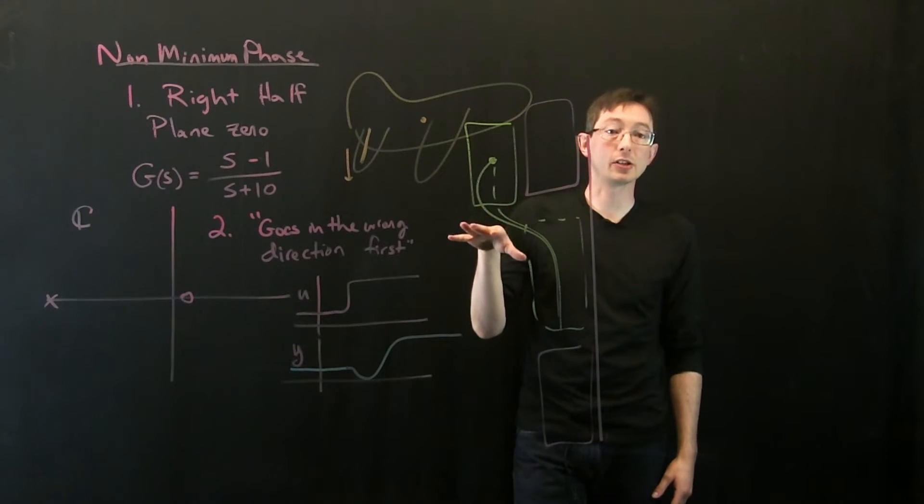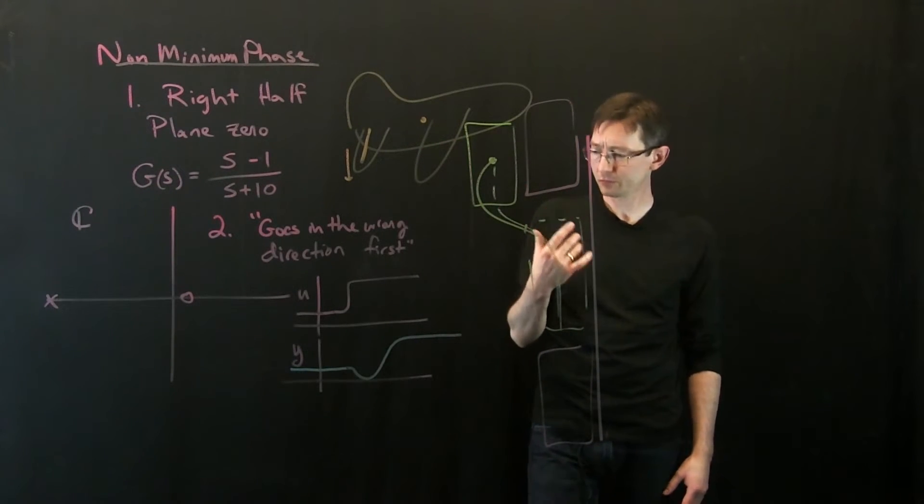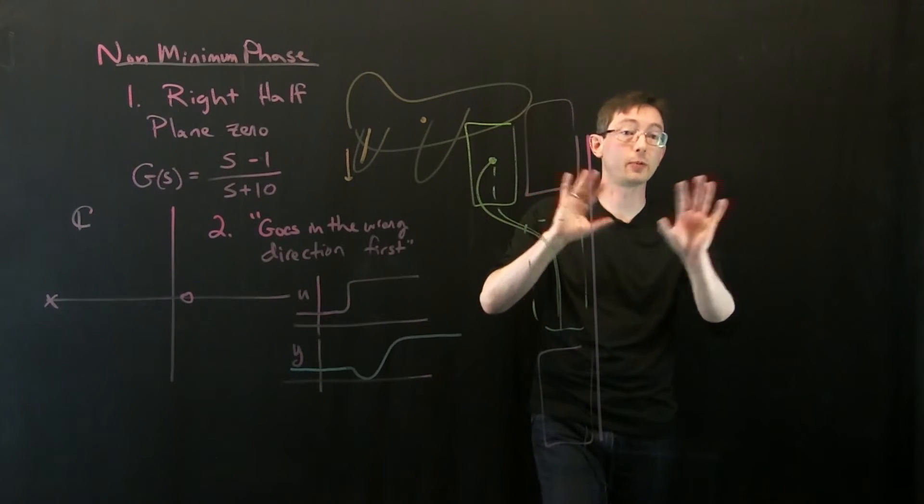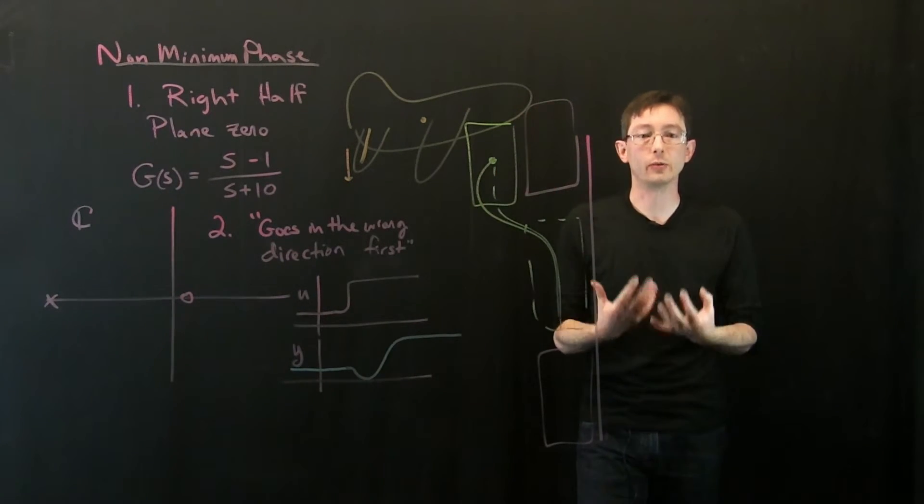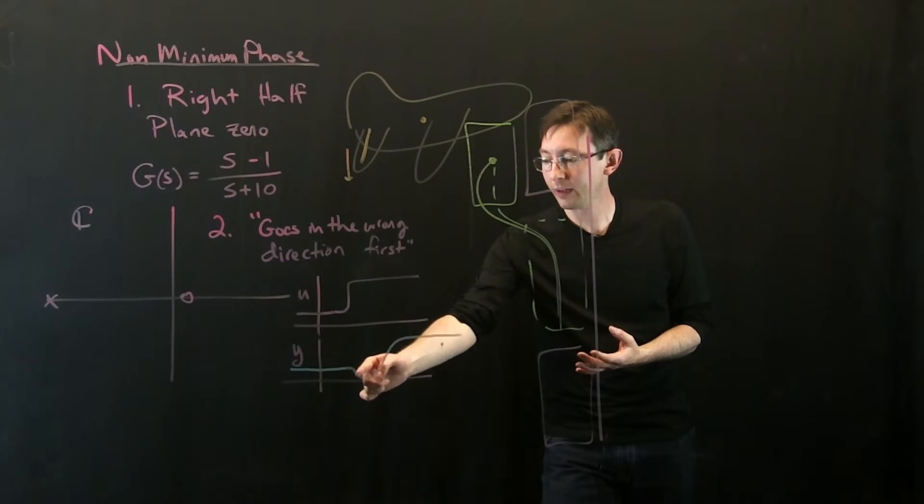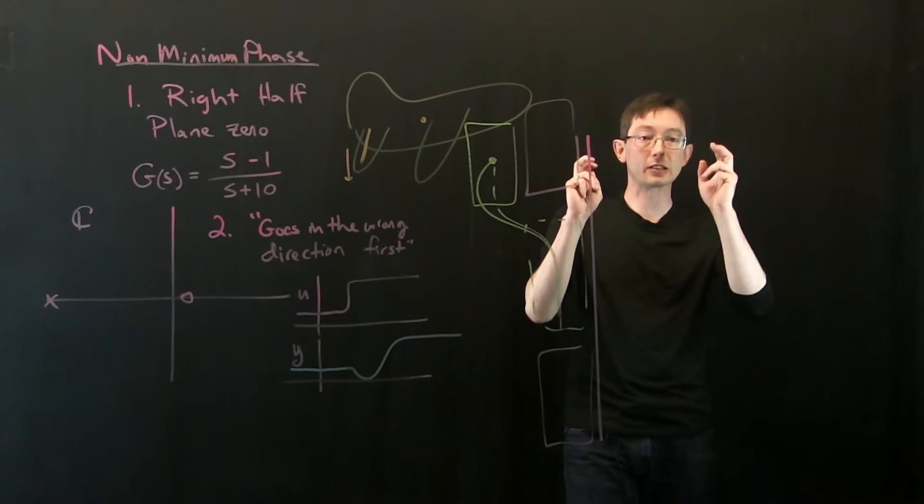And this has some important implications for robust control because I'm, okay, I'm just going to be super hand wavy here for a minute, but this is the right intuition, I think. You can think of this dip as almost like a little time delay.